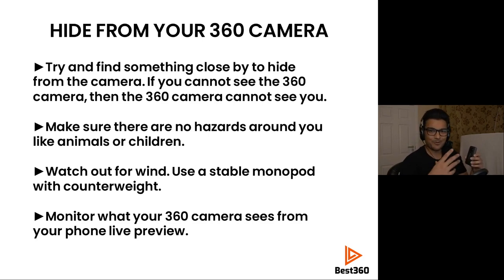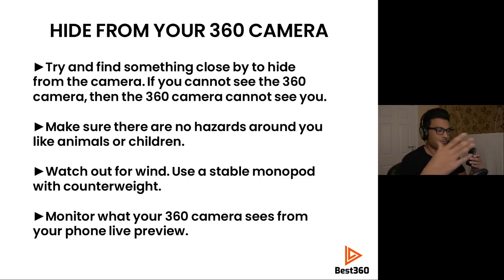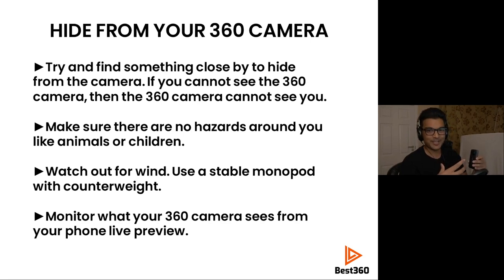When 360 photos are taken, normally you don't see anyone in the photo, which means the person taking the photo needs to hide. If you don't want to be in it, hide so you don't have to edit yourself out. Try to find something close to hide behind — like a big tree. Make sure there are no hazards around you like animals or children, because if they knock over your camera you smash a lens and have to replace it. Be aware of your surroundings before leaving your camera unattended.